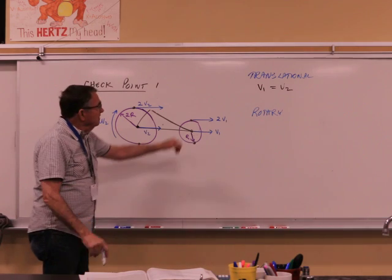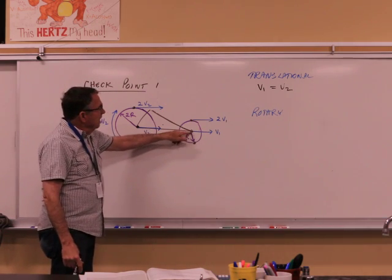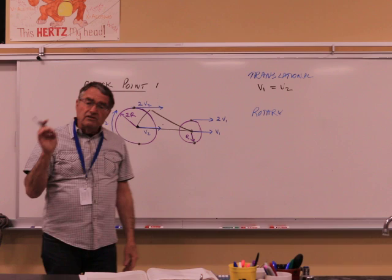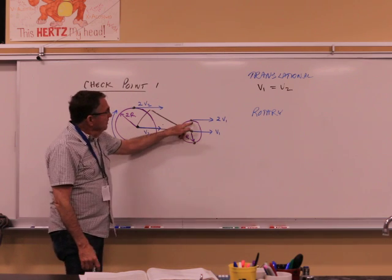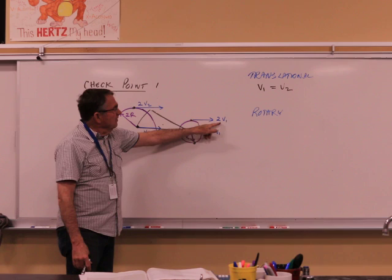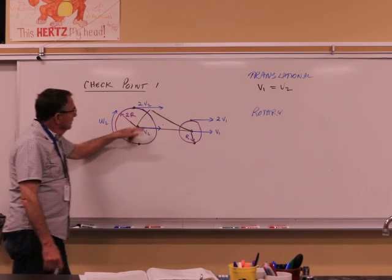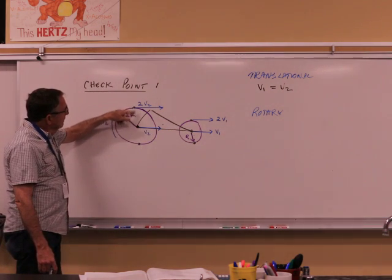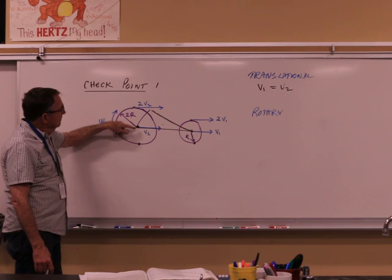The question is at the top of the wheel. At the top of the wheel, from our previous physics, we know something. This travels twice as far. Therefore, the velocity is twice V1. And this one here, top of the wheel, is twice V2.